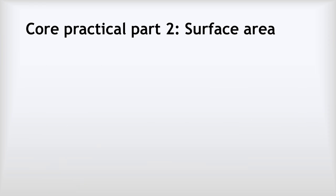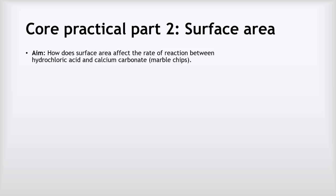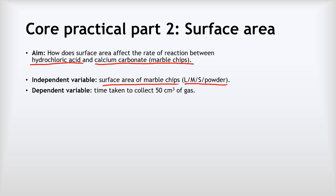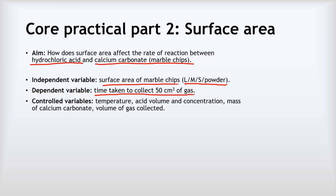Part two of the practical was investigating the effect of surface area — specifically, how does the surface area affect the rate of reaction between hydrochloric acid and calcium carbonate (marble chips)? Our independent variable was the surface area of the marble chips, using large, medium and small chips and powder. Our dependent variable — the result we were measuring — was the time it took to collect 50 cm³ of gas.